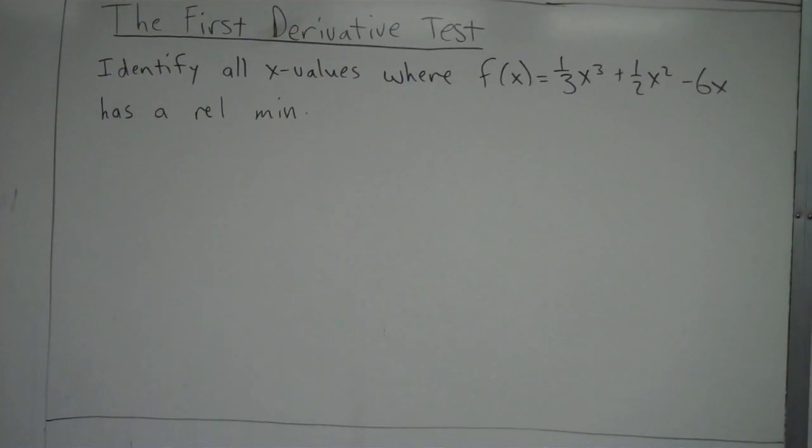Alright, take a look at another example here. It's asking us to identify all x values where f(x), which is one-third x cubed plus one-half x squared minus 6x, has a relative minimum.